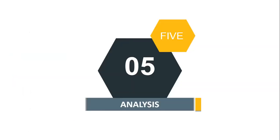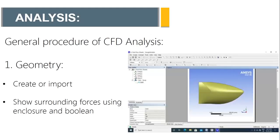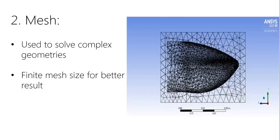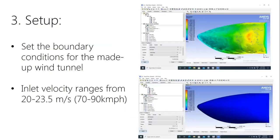For the analysis, ANSYS software was used. The analysis was done by my teammate Jatin Dado for both nose cones. The first step is geometry — either created in ANSYS or imported from other software, then surrounding boundary values are assigned. The second step is meshing — the model is cut into small pieces, as CFD analysis works on the concept of Finite Element Analysis, where small parts are individually analyzed.